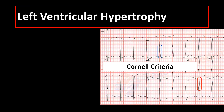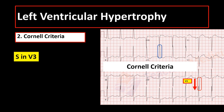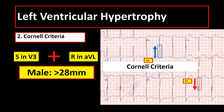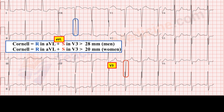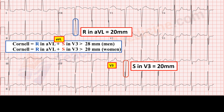The next criteria is the Cornell criteria, which is the sum of the amplitude of the S wave — the negative deflection in V3 in millimeters — plus the amplitude of the R wave — the positive deflection in AVL in millimeters — is more than 28 millimeters in male or more than 20 millimeters in female. For example, in this case, the patient is a male. The S in V3 is 20 millimeters and the R in AVL is 20 millimeters, with a total of 40 millimeters. So this is left ventricular hypertrophy by Cornell criteria.